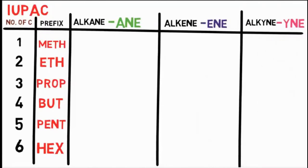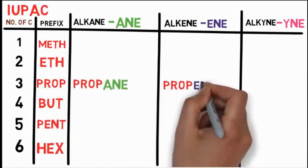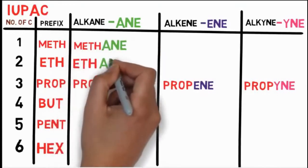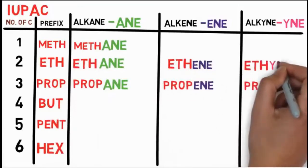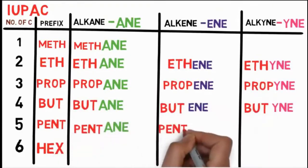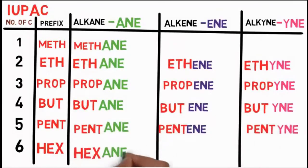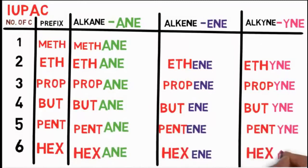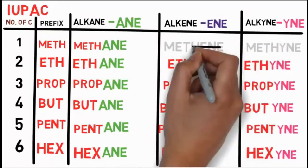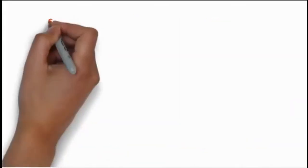So if we join them, let's try it out with prop — that is 3 carbons — it comes out as propane, propene and propyne. Similarly, for others you get methane, ethane, ethene, ethyne; butane, butene, butyne; pentane, pentene, pentyne; hexane, hexene and hexyne. Methene and methyne are not chemically possible and hence do not exist.